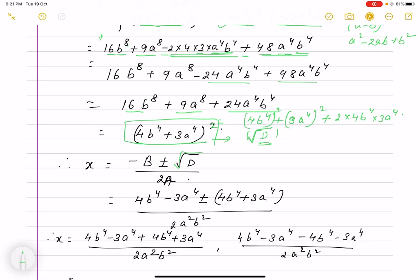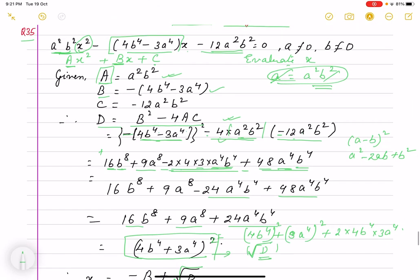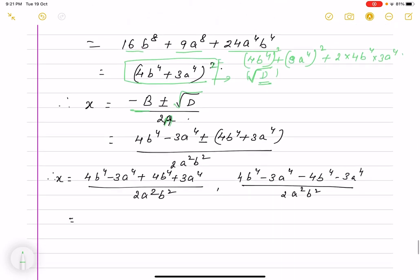Now x = (-B ± √D) / 2A. We substitute the values: -B = 4b⁴ - 3a⁴, and we've evaluated D, so √D = 4b⁴ + 3a⁴.